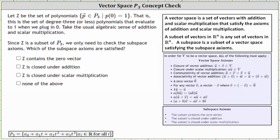A vector space is a set of vectors with addition and scalar multiplication that satisfy the axioms of addition and scalar multiplication, which are shown here below. There are five axioms of addition and five axioms of scalar multiplication. A subset of vectors in Rn is any set of vectors in Rn. A subspace, however, is a subset of a vector space satisfying the subspace axioms, which are listed below. Notice here there are only three subspace axioms.